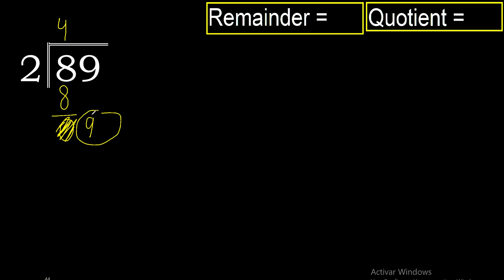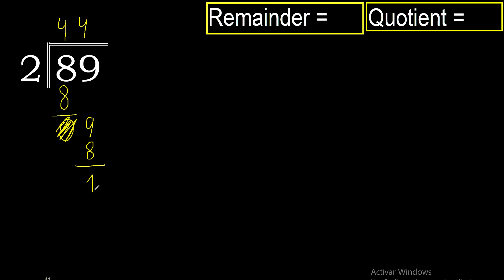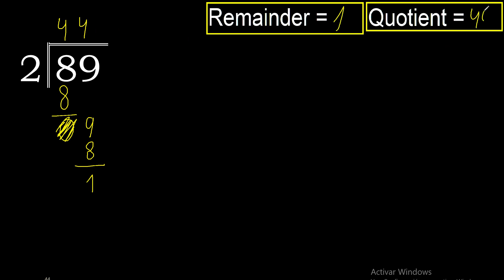Now with 9: 2 multiplied by 5 is 10 — excessive. 2 multiplied by 4 is 8; 8 is the closest. 9 minus 8 is 1. There is no number that goes down, therefore finish. Therefore the remainder is 1 and the quotient is 44.